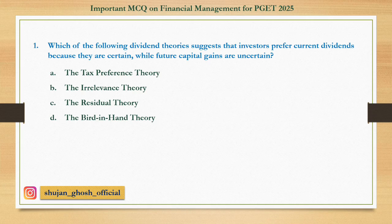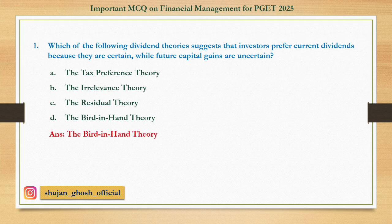Question number one: Which of the following dividend theories suggests that investors prefer current dividends because they are certain while future capital gains are uncertain? Option A: the tax preference theory. B: the irrelevance theory. C: the residual theory. D: the bird in hand theory. Answer: the bird in hand theory.